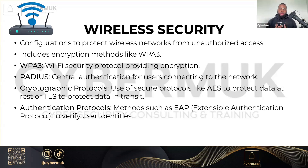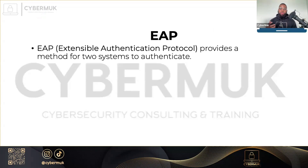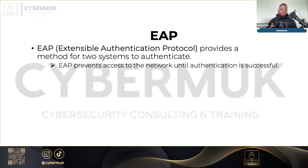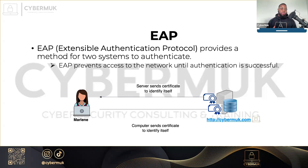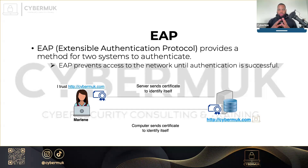You also have authentication protocols — for example, EAP, Extensible Authentication Protocol. This is used to verify user identities and is a type of protocol in wireless networks that provides a method for two systems to authenticate. It prevents access until authentication is successful. For example, Marlin tries to connect to cybermook.com — Marlin's computer sends a certificate to identify itself, and cybermook.com sends a certificate back, and both create a trusted relationship. There are different types of EAPs, but this is an overview of how the EAP protocol works.